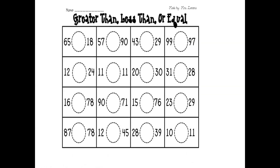Greater than, less than. Now we are going to read. Put the sign — greater than, less than, or equal. 65 and 18. This is 6 starting, then 5. You are starting with 1 and 8. Which is bigger? 65 is bigger. So, open mouth — 65 greater than 18.